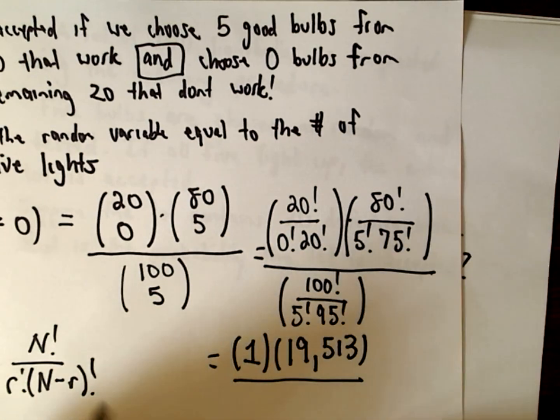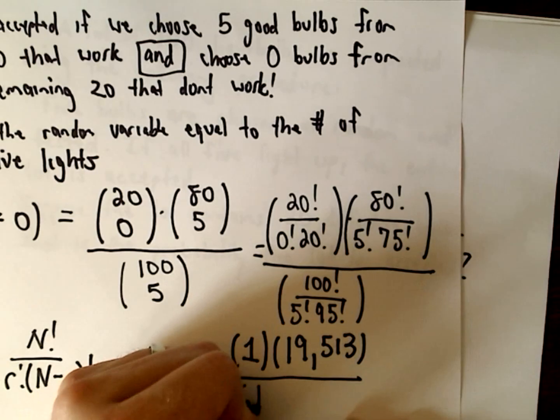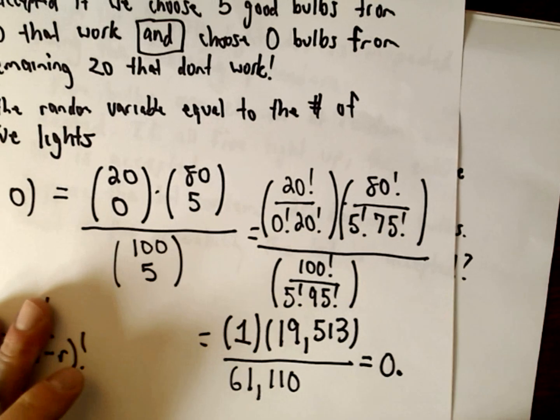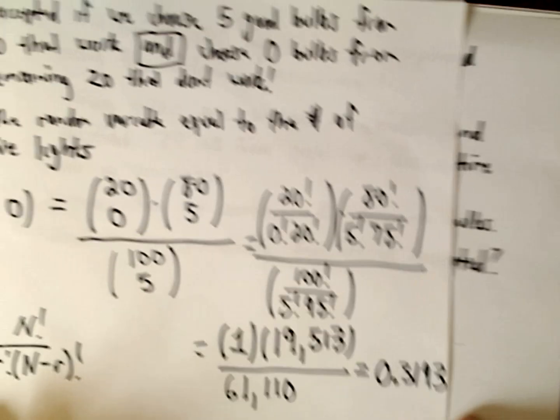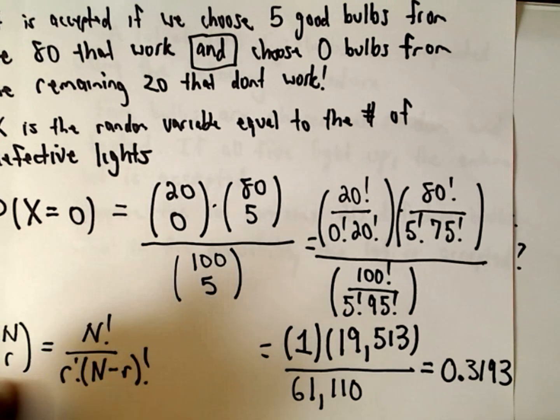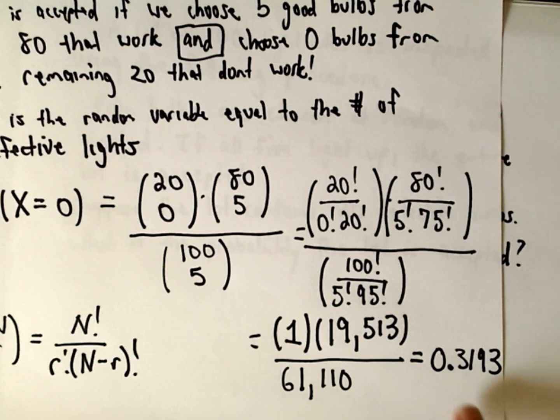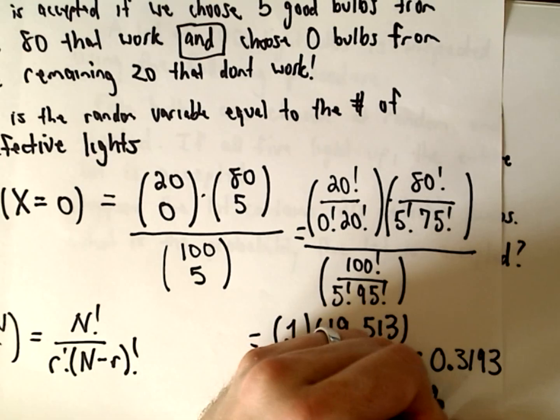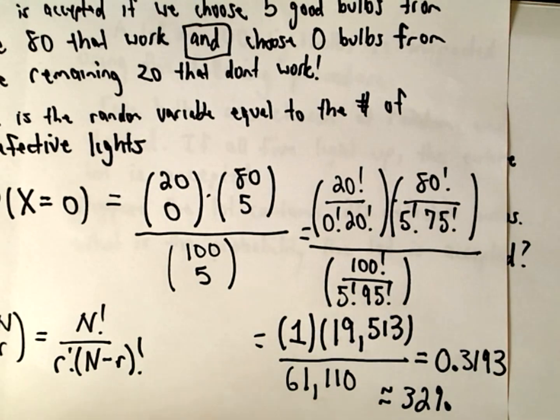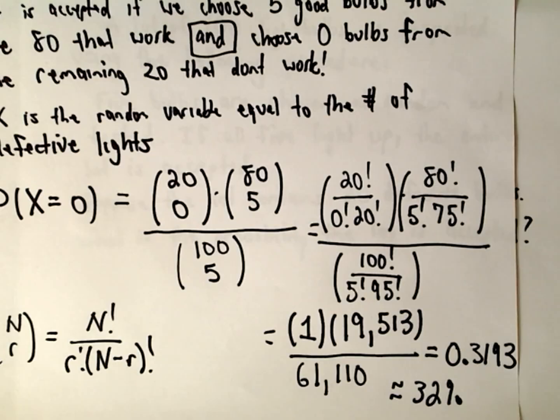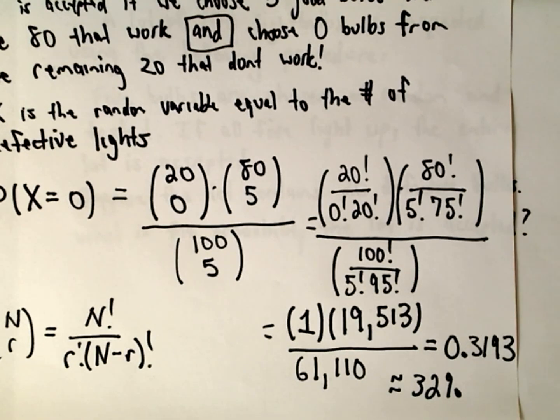100 choose 5 is equal to 61,110. If you simplify all this you get 0.3193. So even though 20% of the light bulbs are defective, it turns out that the probability of that shipment getting accepted is actually a little bit over, almost 32%. So roughly equal to 32%. The probability that you get zero defective light bulbs, which means you ship off that shipment of light bulbs, 20 of which are bad, 80 of which are good, is roughly equal to 32%.